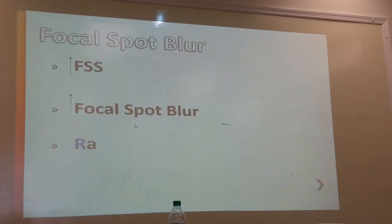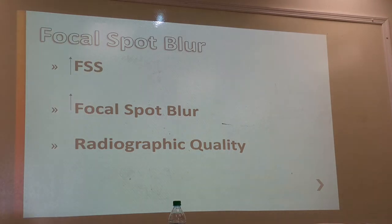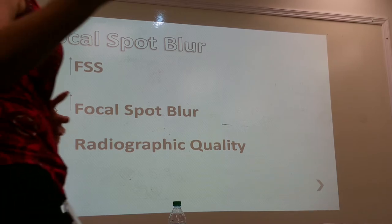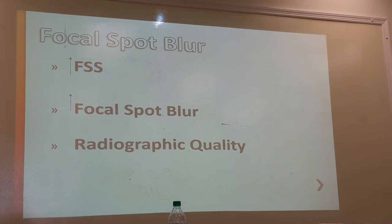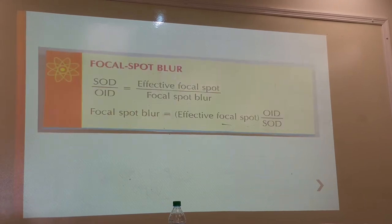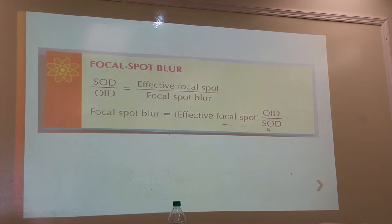Focal spot blur: as we increase the focal spot size, the blurring is also increased, so radiographic quality decreases. There will be quite a few of those relationship questions on your test. There is a formula to determine the blurring caused by a focal spot — you take the effective focal spot and multiply it by the OID over the SOD.